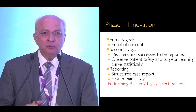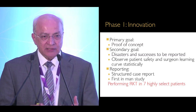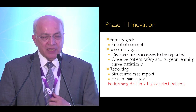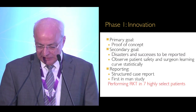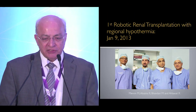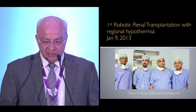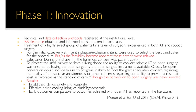Coming to the 'I' of IDEAL — the Idea phase — the primary goal is proof of concept. Secondary goals are that disasters and successes need to be reported, patient safety observed, and the surgeon learning curve tracked statistically. A first-in-human study was performed by doing robotic transplant in seven patients over seven days. The first case was January 9, 2013. Technical and data collection protocols were registered, and IRB clearance was obtained.